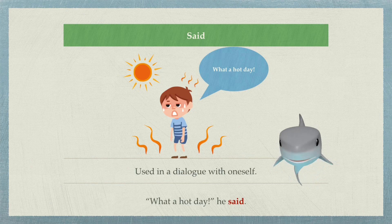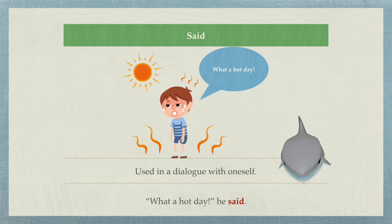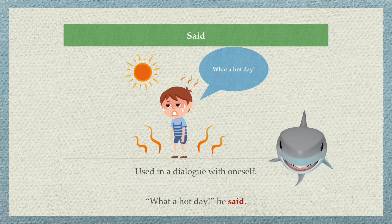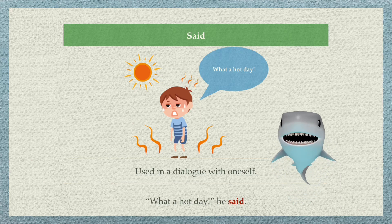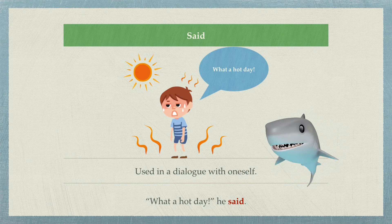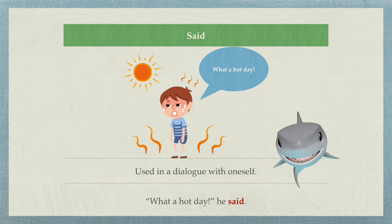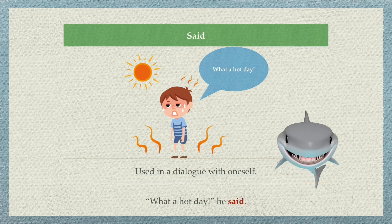Now, said is usually used when one is talking to himself or herself. For example, in this picture, it's a very hot day and this boy is thinking to himself, 'What a hot day,' he said. For me, when I'm swimming in the ocean and I look at this little fish, I will think to myself, 'This fish looks delicious,' I said.